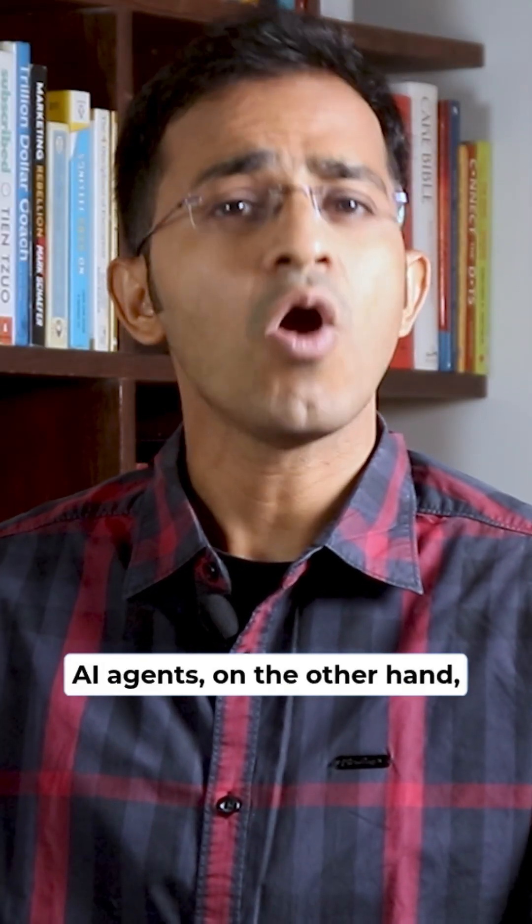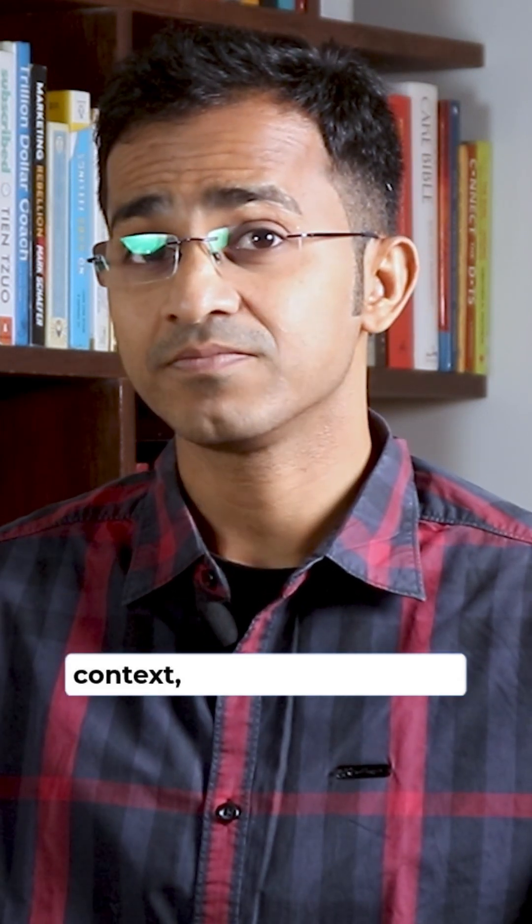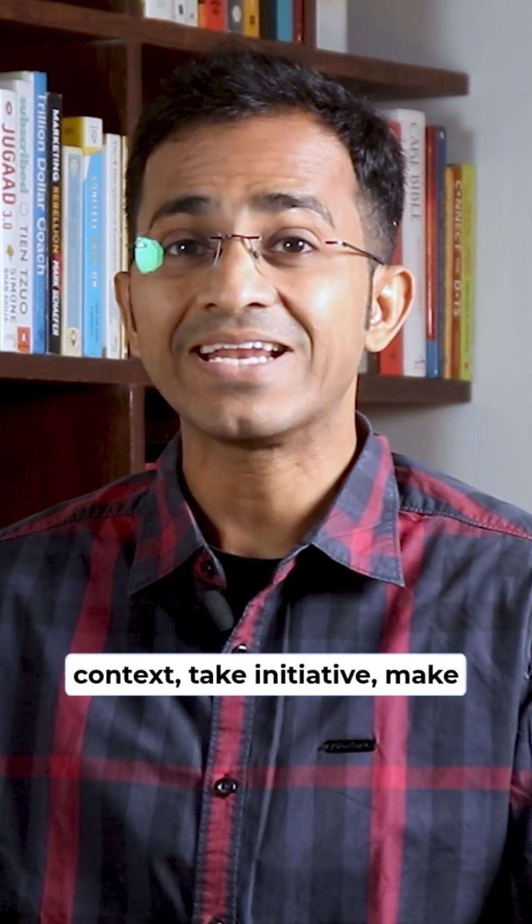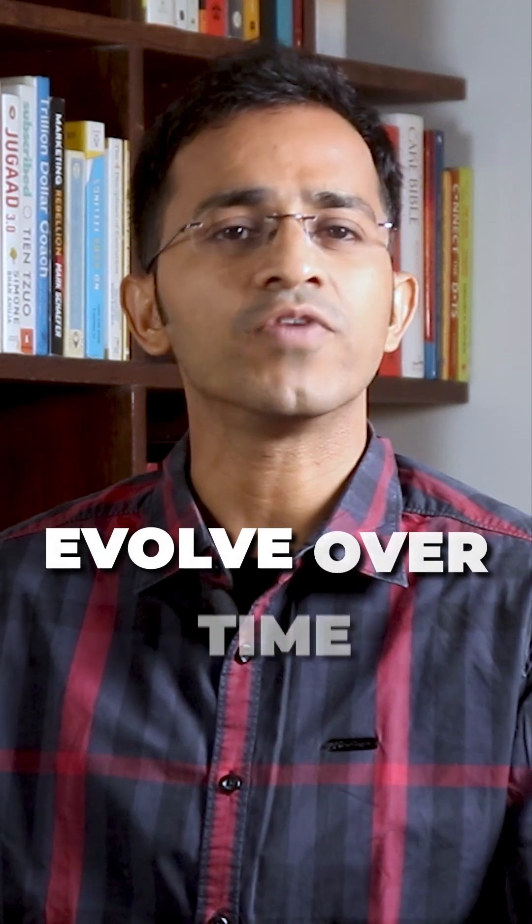AI agents, on the other hand, operate more like junior team members. They understand context, take initiatives, make decisions, and evolve over time.